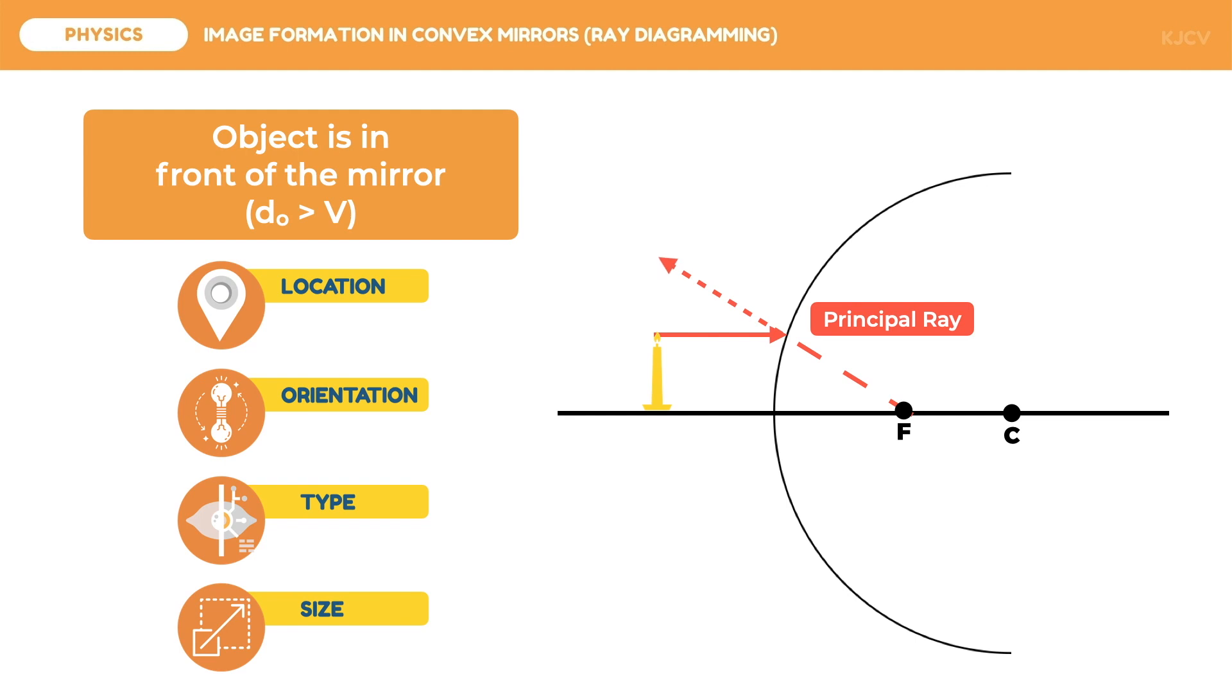The second ray is the focal ray. It is a ray incident to the focus, but since this is a convex mirror, light cannot enter the mirror to reach the focus. What we need to do is to draw an imaginary line connecting the tip of the object to the focal point. This is our guide for the incident ray, which will be drawn only up to the mirror. Then, it will be reflected parallel to the principal axis.